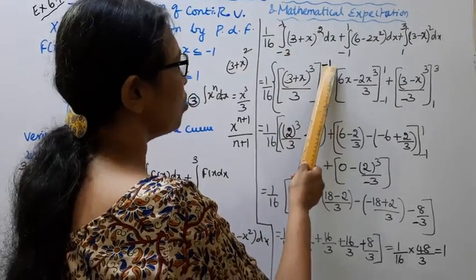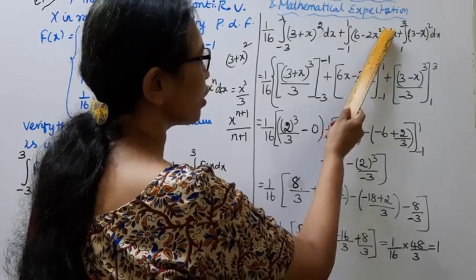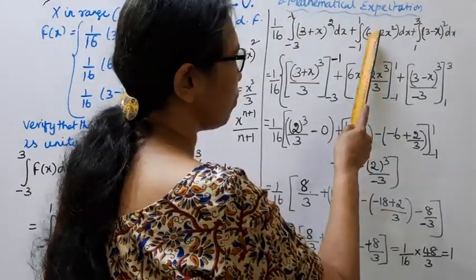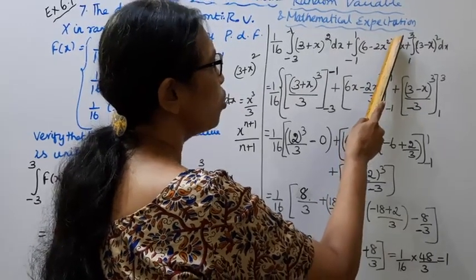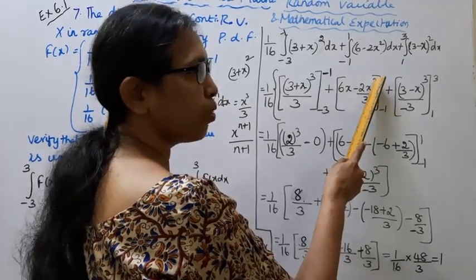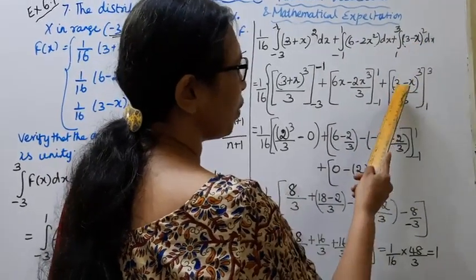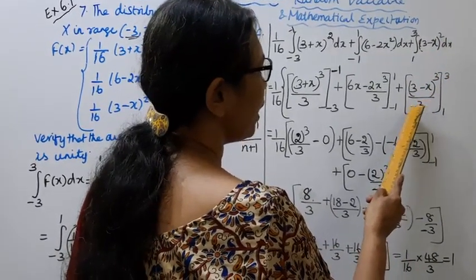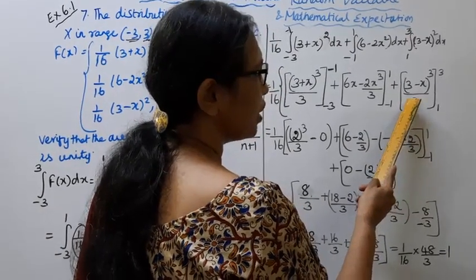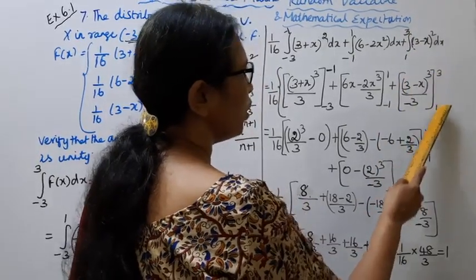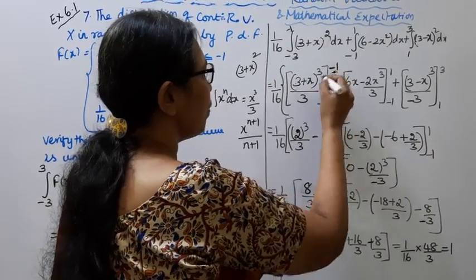Now applying the limits. For the first piece, the limits are -3 to -1. For (3 - x)²: integrating gives (3 - x)³ divided by 3, with the sign from the coefficient of x being minus, so divided by minus 3. Upper limit is 1, lower limit is -3. We substitute x into all three expressions.